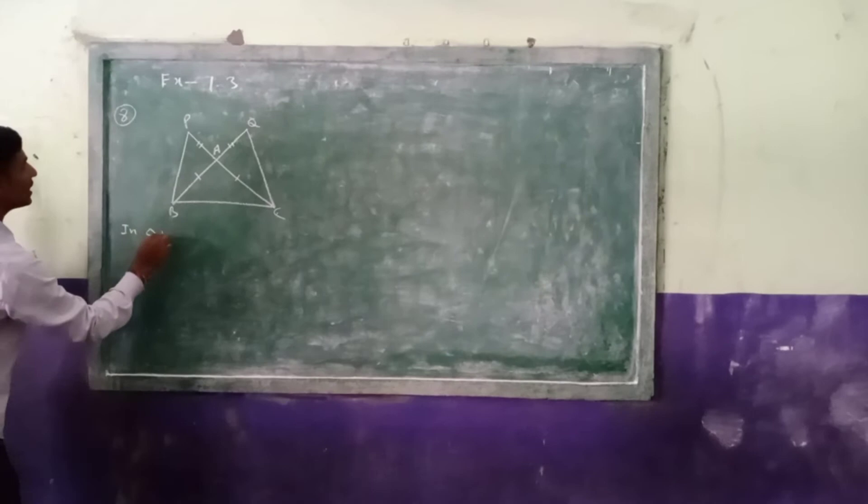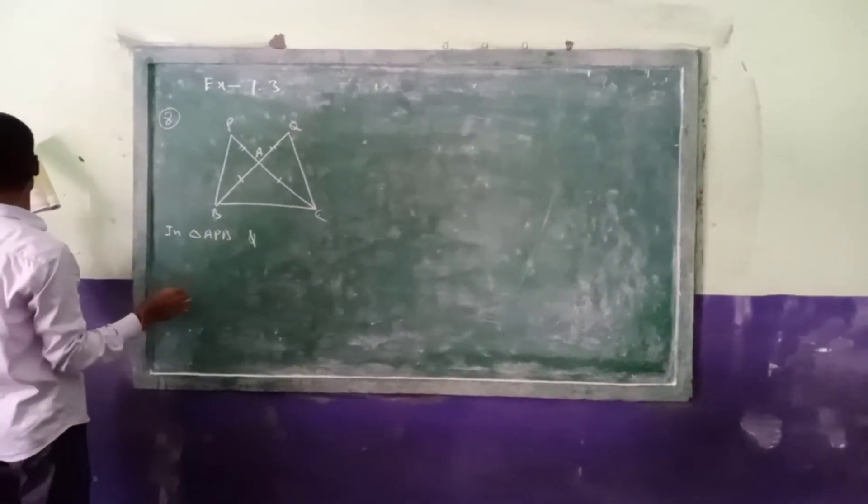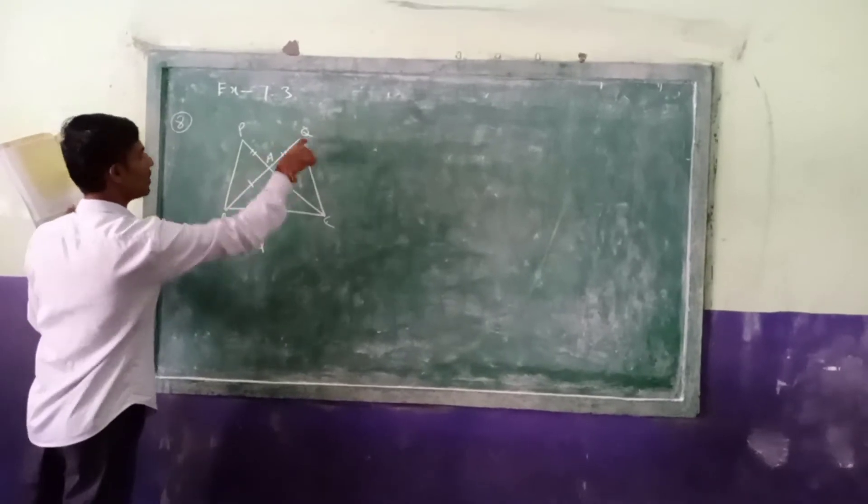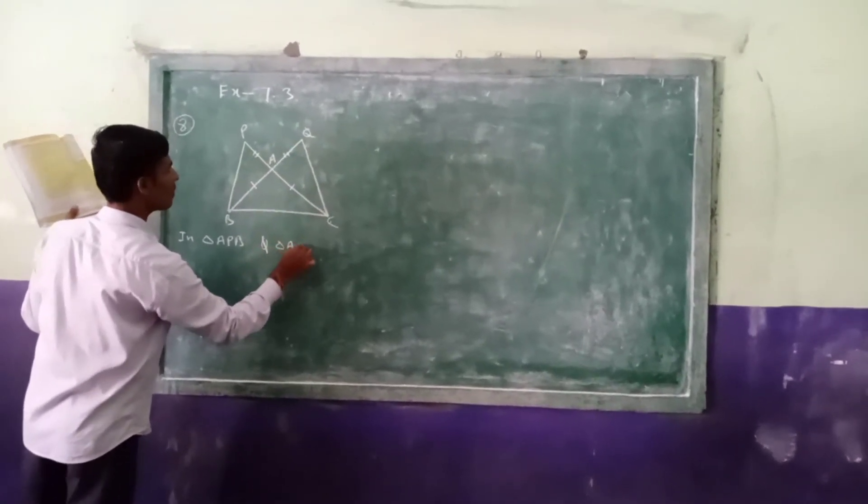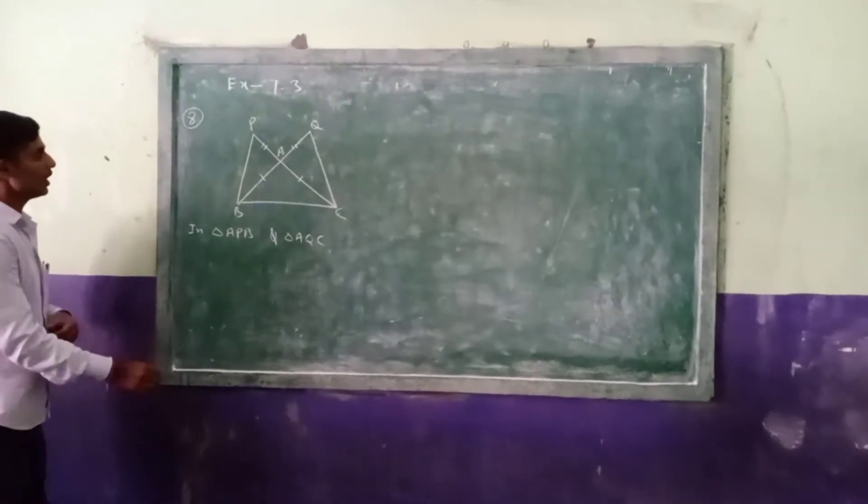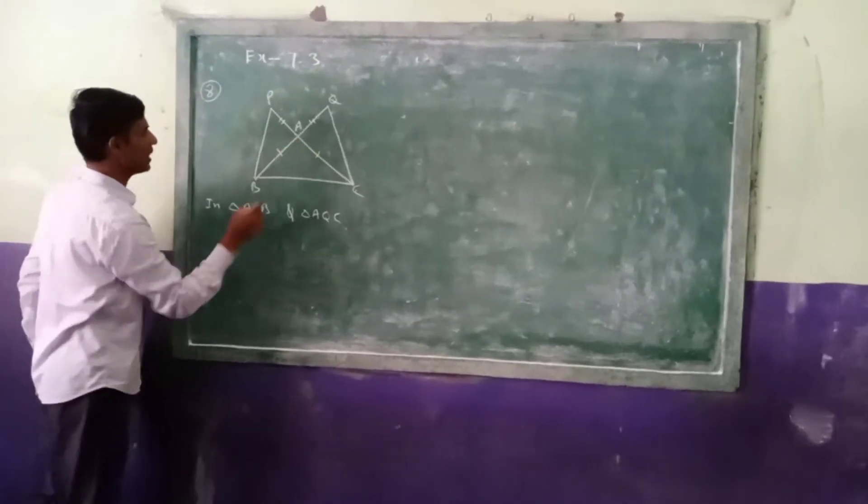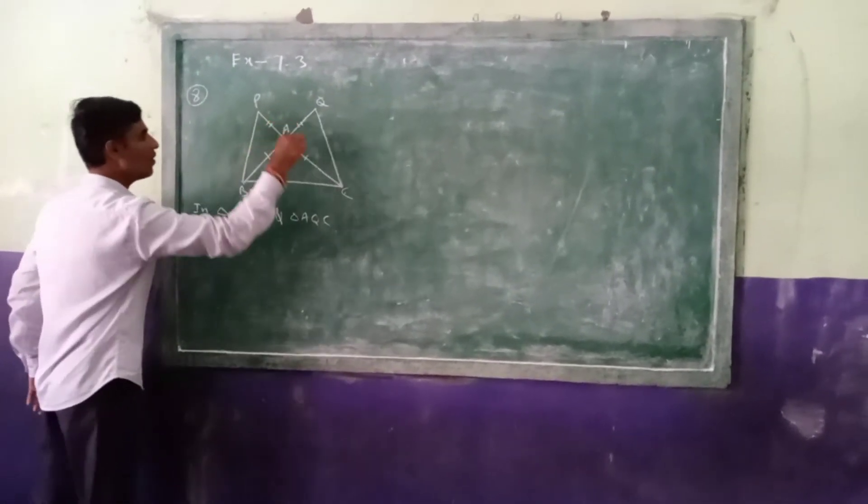I am taking here APB and triangle AQC. These two triangles we are taking. So in this, AB equal to AC.